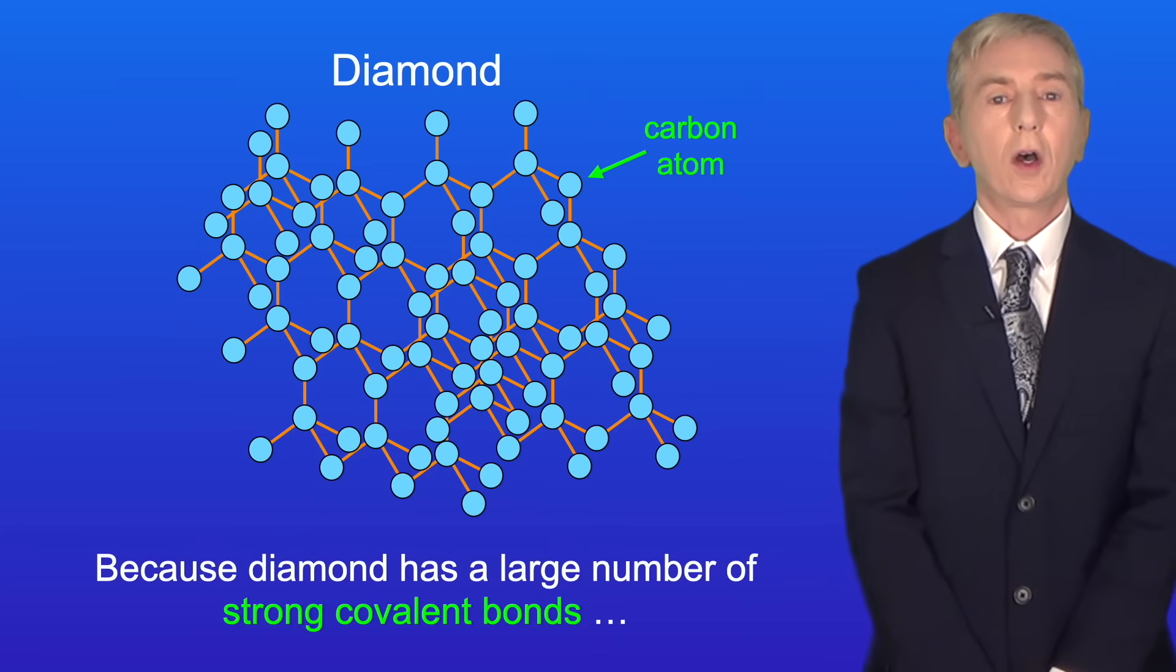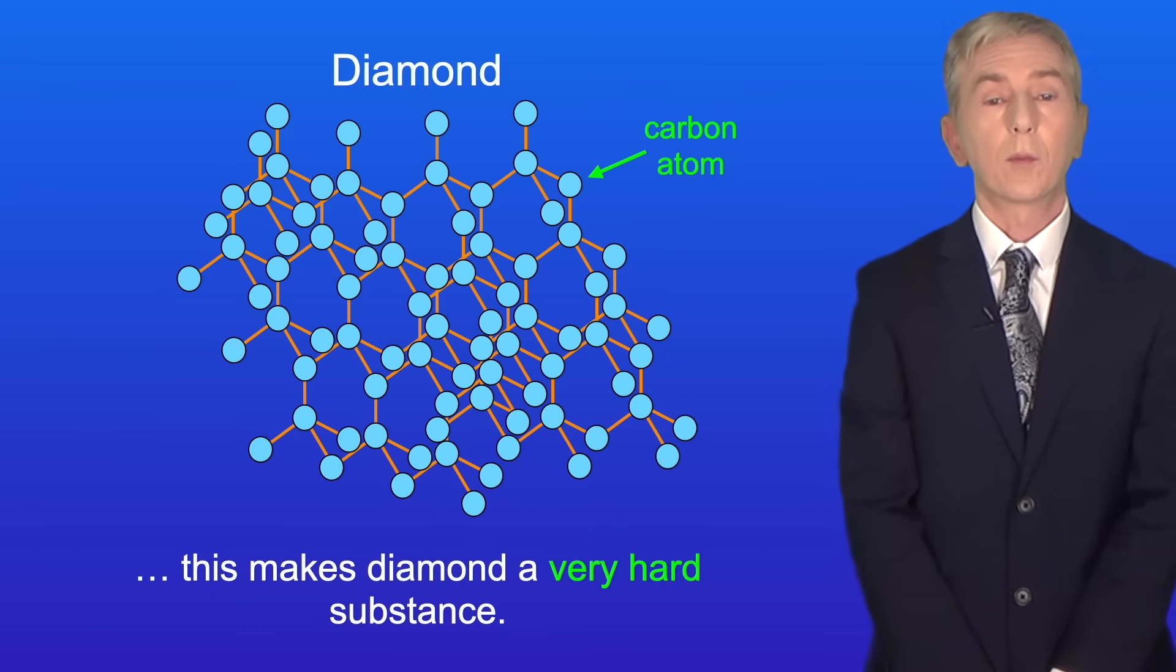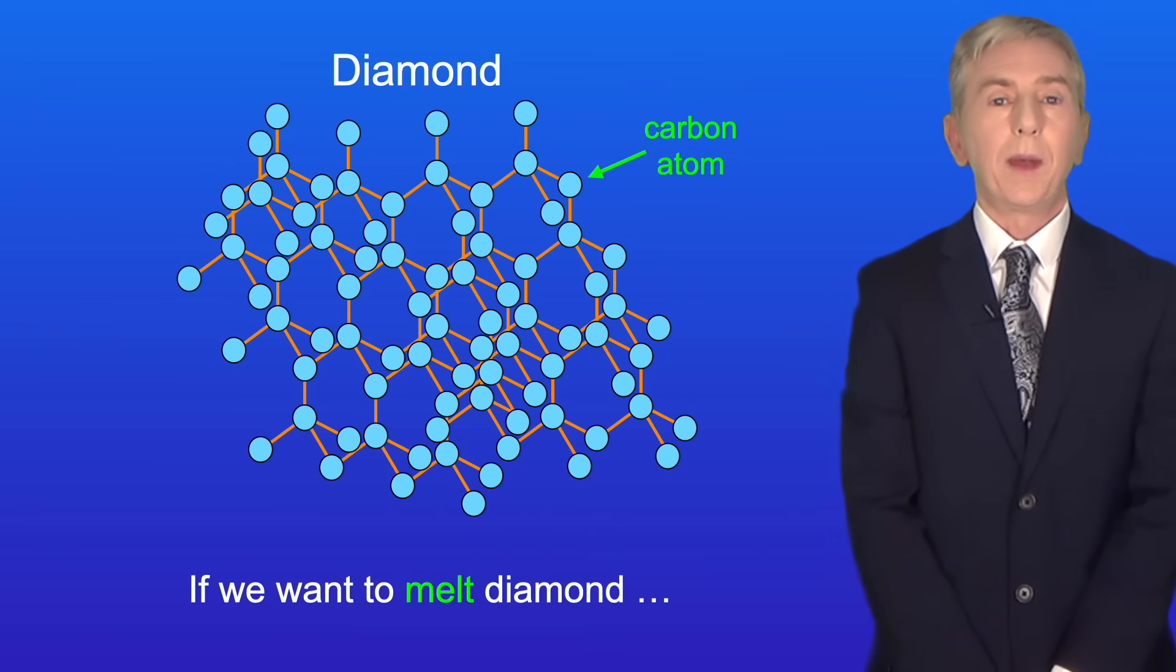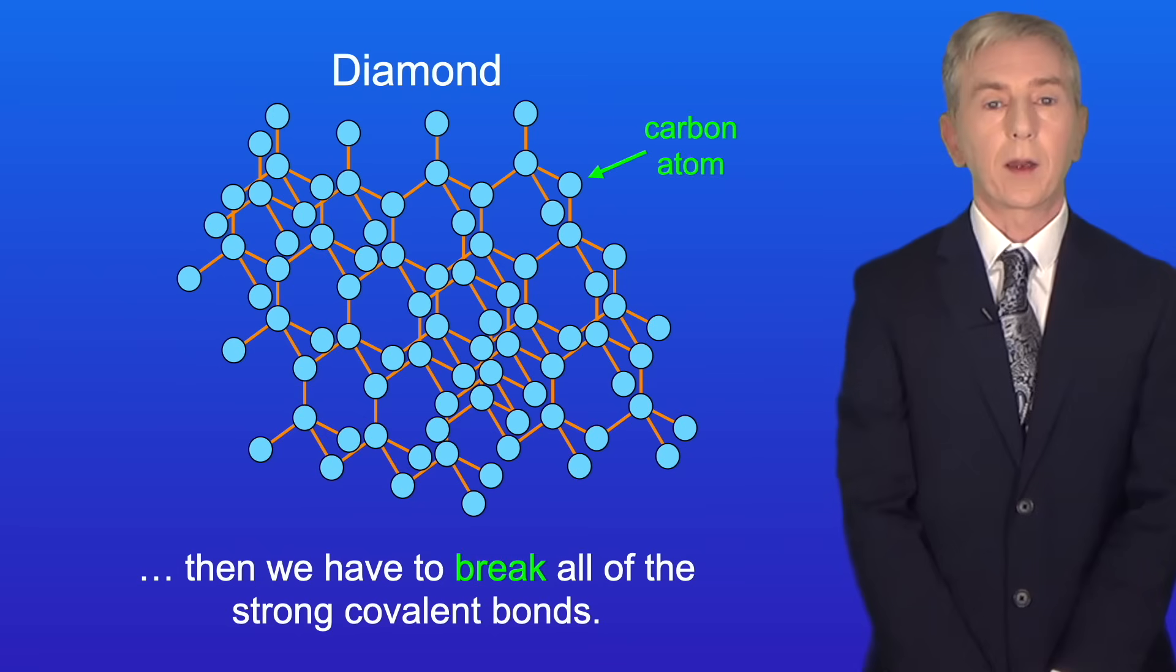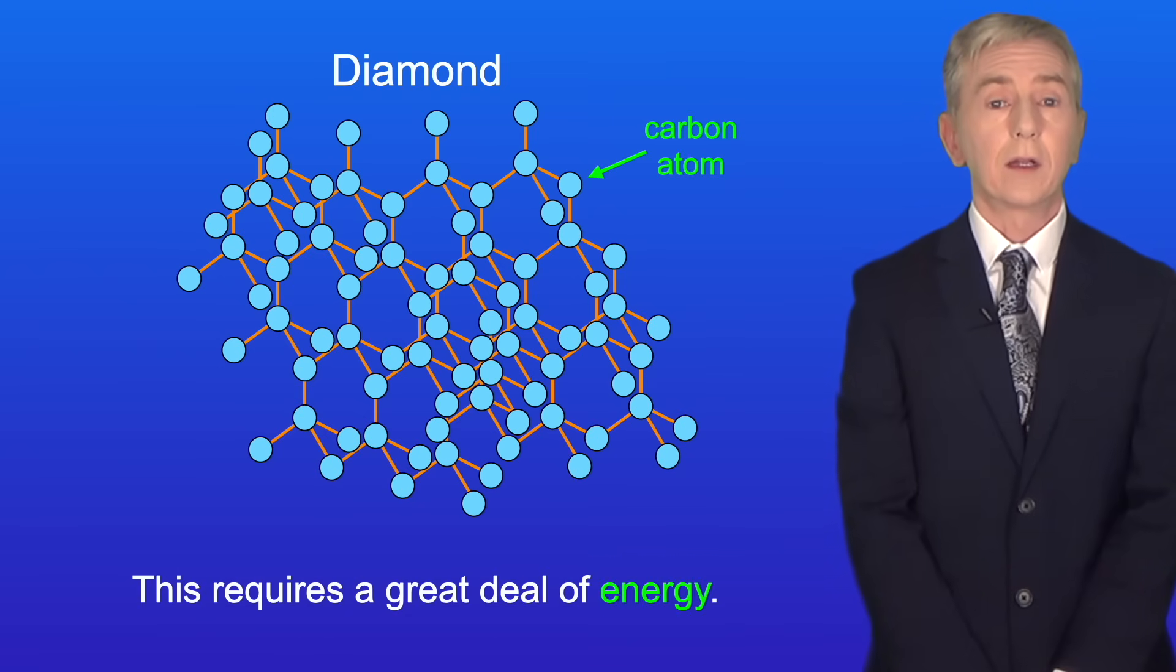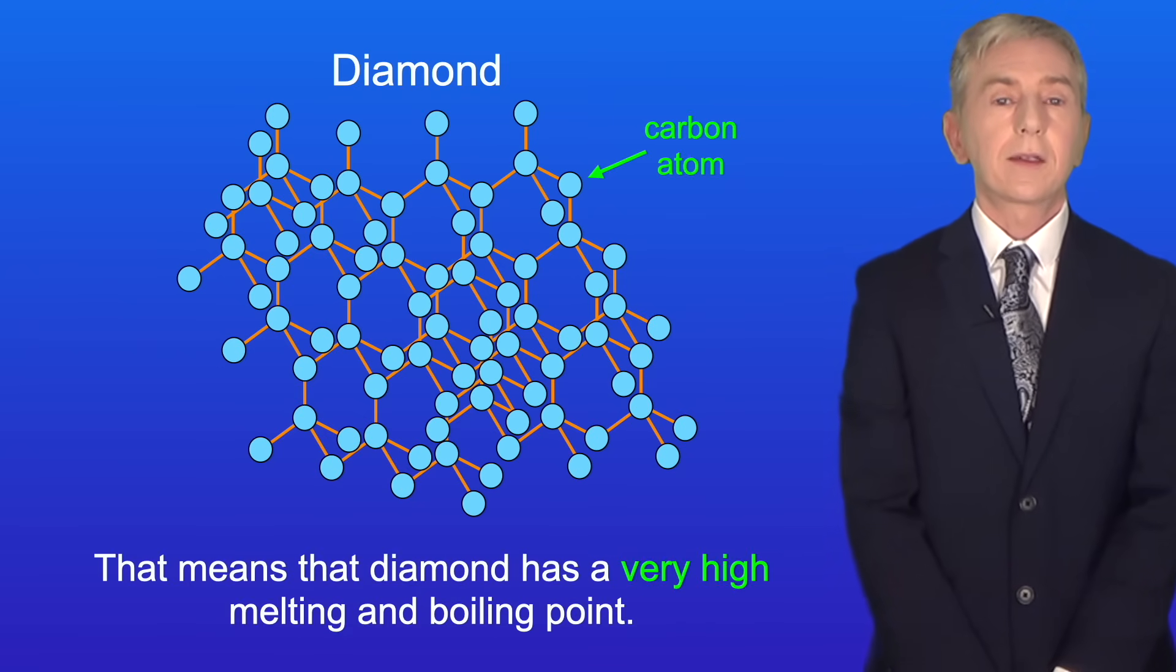Because diamond has a large number of strong covalent bonds this makes diamond a very hard substance. If we want to melt diamond then we have to break all of the strong covalent bonds and this requires a great deal of energy. That means that diamond has a very high melting and boiling point.